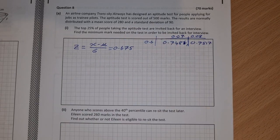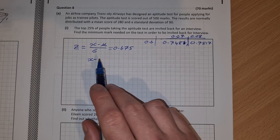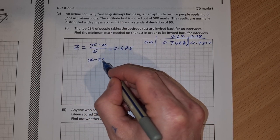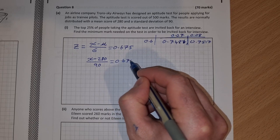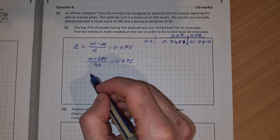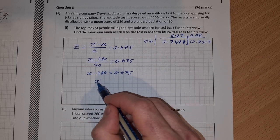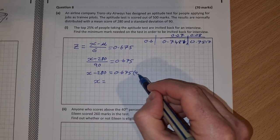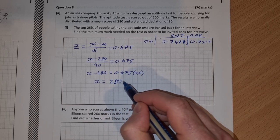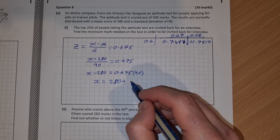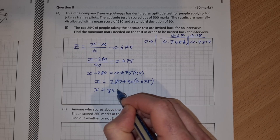We let our z-score equal 0.675 and fill in the rest of what we know. We know that it's x minus mu, mu is our mean 280, divided by sigma our standard deviation of 90. That equals 0.675. Now we solve for x. Multiply across by 90 to get x minus 280 equals 0.675 times 90. So x equals 280 plus 90 times 0.675, which gives us an answer of x equals 340.75.